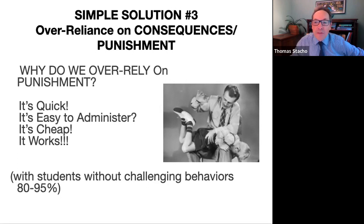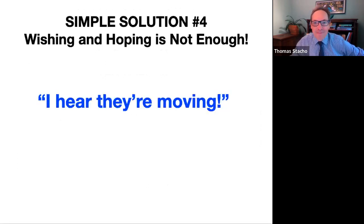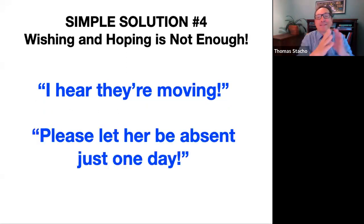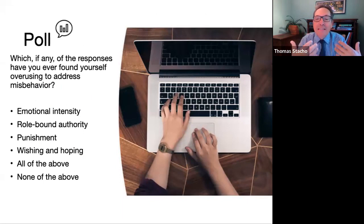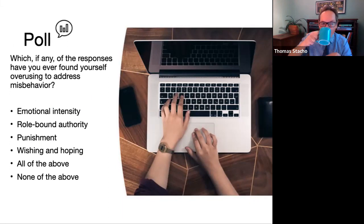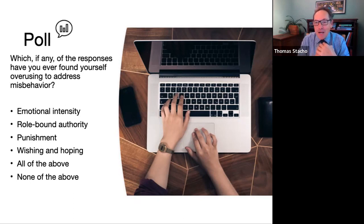I speed on I-71, I've gotten tickets, and you know what? I still speed. Consequences alone don't stop or change behavior. Teaching, monitoring, and providing feedback changes behavior. Another simple solution is wishing and hoping the problems will go away — 'I hear they're moving,' or 'Please let her be absent one more day.' In the chat box, identify one of these simple solutions that might still be alive with you or in your building. I'm hearing: role-bound authority, emotional intensity, all of the above.